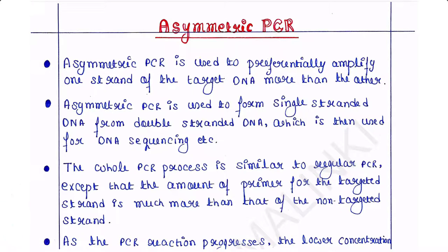Asymmetric PCR is used to preferentially amplify one strand of the target DNA more than the other. Asymmetric PCR is used to form single-stranded DNA from double-stranded DNA, which is then used for DNA sequencing etc. Basically, if we need to amplify only one strand of the double-stranded DNA then we can use Asymmetric PCR.